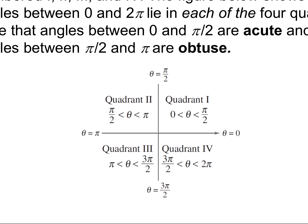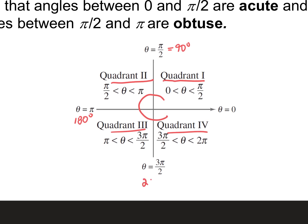Quadrant 1 is the top right, we go in the shape of a C. Quadrant 1 is top right, Quadrant 2 is top left, Quadrant 3 is bottom left, and Quadrant 4 is bottom right. Now: 90 degrees is the same as pi over 2, pi is the same as 180 degrees, 3 pi over 2 is the same as 270, and 0 and 2 pi are the same as 360. You need to memorize that. If one whole circle is 2 pi, half is pi, and a quarter is pi over 2.